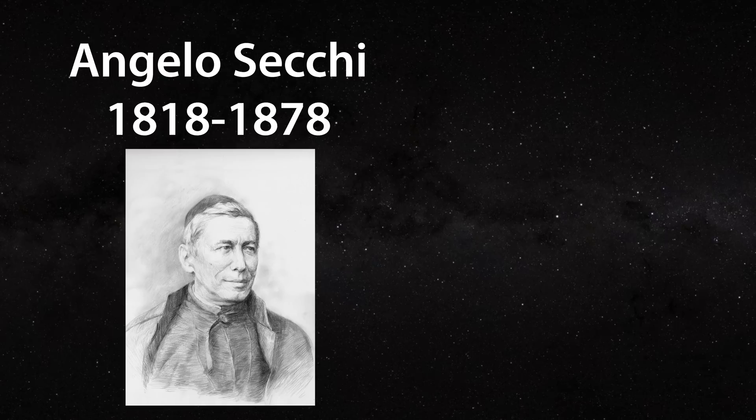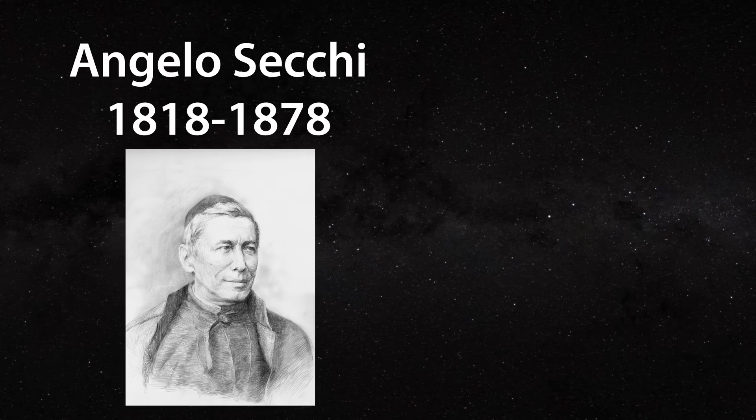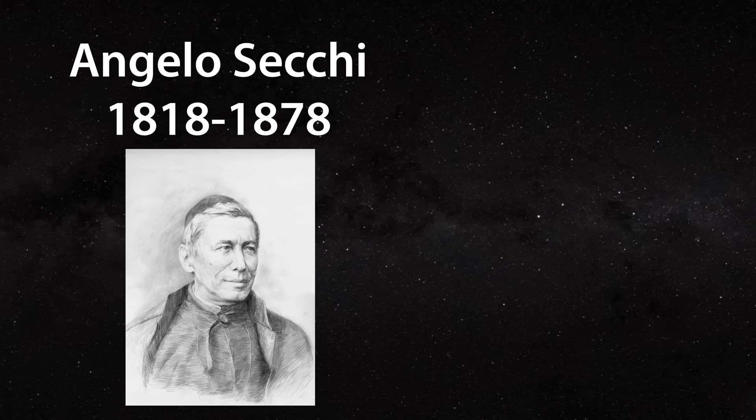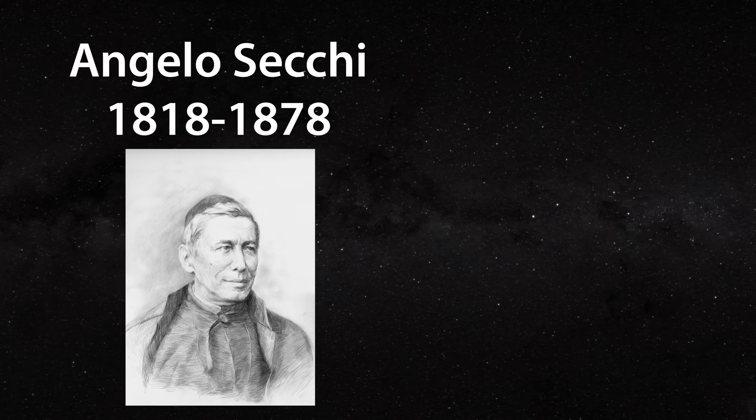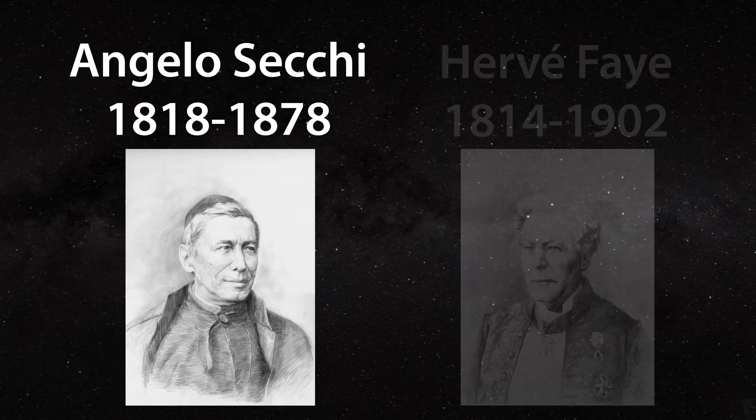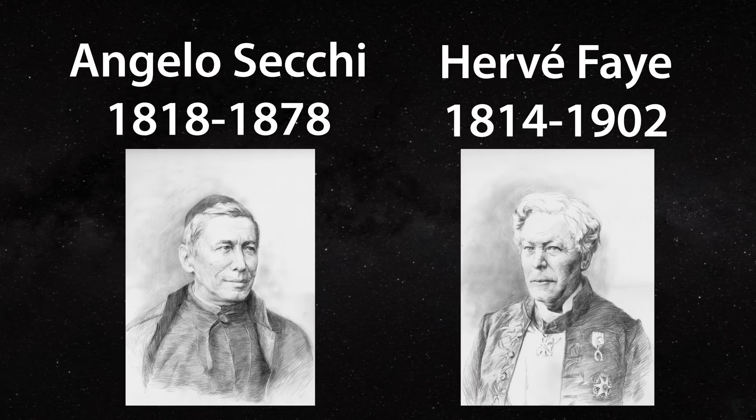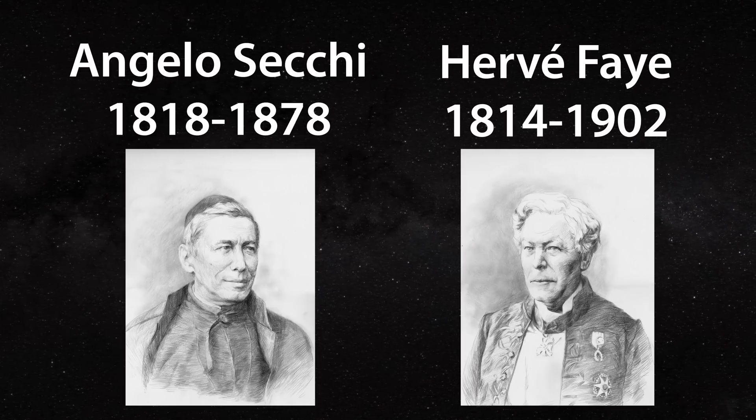Soon after Spencer, in 1864, an Italian named Father Angelo Seci made the next big leap in solar modeling. Seci was the head of the Vatican Observatory. His ideas about the constitution of the sun were later copied by the Frenchman Hervé Fay, who was also a statesman. Both Seci and Fay were recognized throughout Europe as leaders in astronomy.